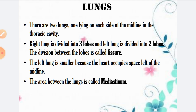The division between the lobes is called a fissure. The left lung is smaller because the heart occupies space to the left of the midline — this creates the cardiac notch — so the left lung remains smaller compared to the right lung. The area between the two lungs is called the mediastinum, and this is where the heart lies.